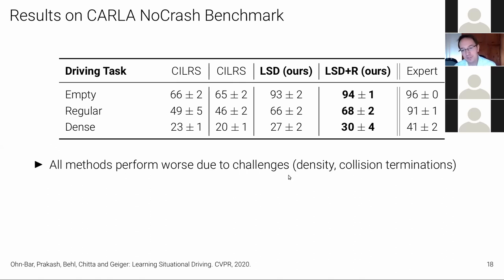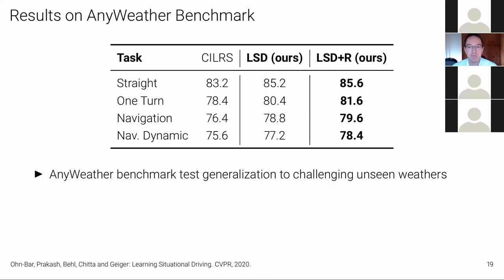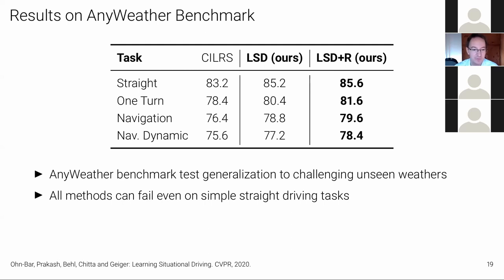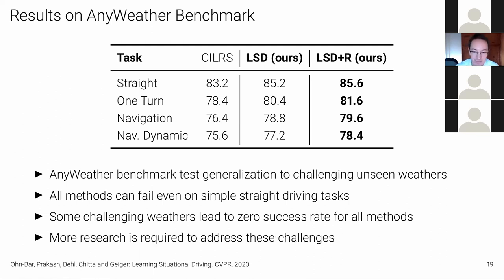On the CARLA no-crash benchmark, all methods perform worse due to additional challenges. Even the expert fails in very dense scenarios — a weakness of the simulator improved in subsequent versions, where there were just too many agents causing traffic jams with no possibility to reach the goal in time. On the any-weather benchmark, all methods can fail even on very simple straight driving tasks, so there is additional work needed to handle weather generalization.